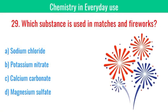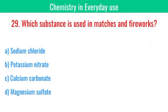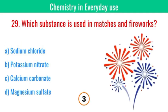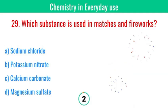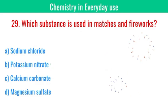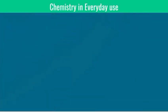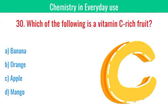Which substance is used in matches and fireworks? The correct answer is potassium nitrate. Which of the following is a vitamin C rich fruit? The correct answer is orange.